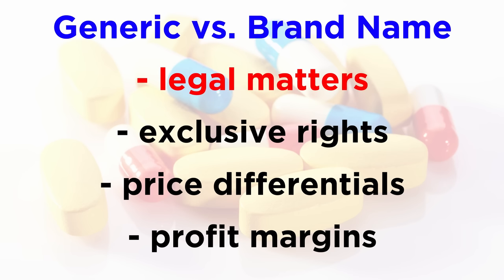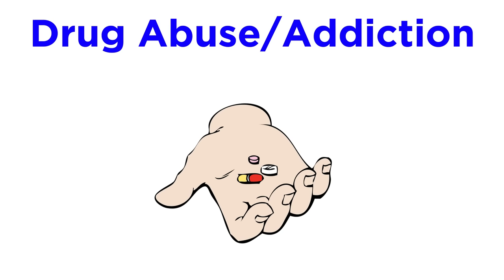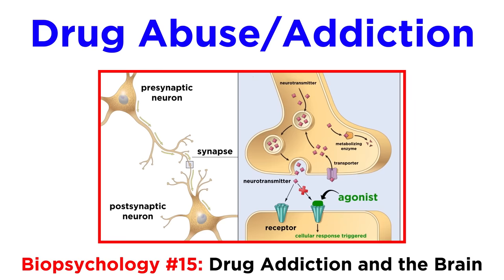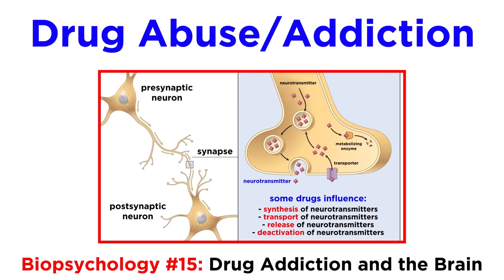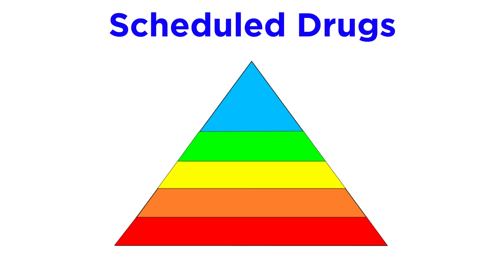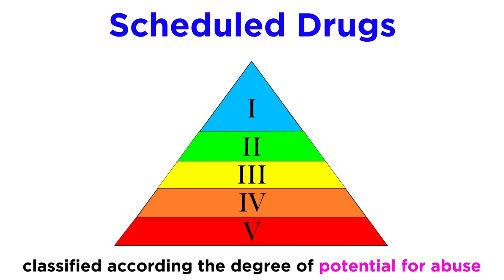Later in the series, we will discuss the legal aspects of brand name drugs versus generic drugs, exclusive rights, price differentials, profit margins, and other key issues associated with the sale of popular drugs. Lastly, there is one more method of classification that we must learn, and it is one that is associated with drugs that have the potential for abuse. These are drugs that have some likelihood of resulting in either physical or psychological dependency, or both. Essentially, we are talking about drug addiction. Drugs with this quality are called scheduled drugs, and they are classified according to the degree of their potential for abuse.